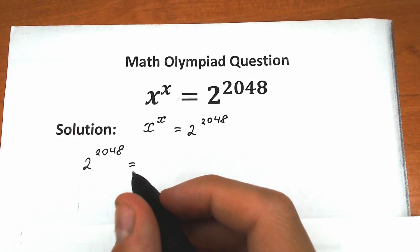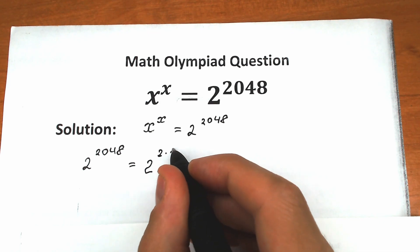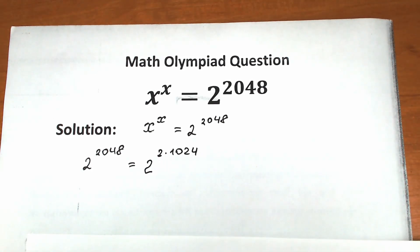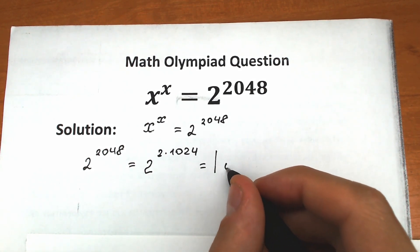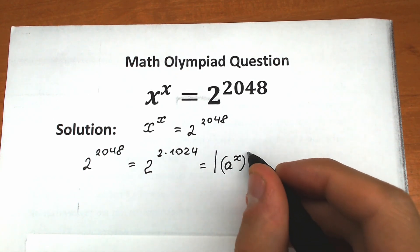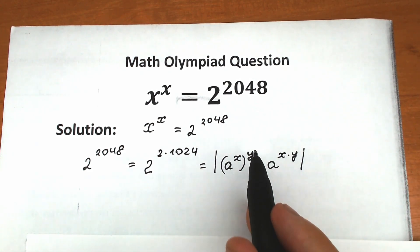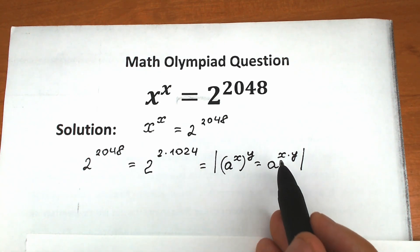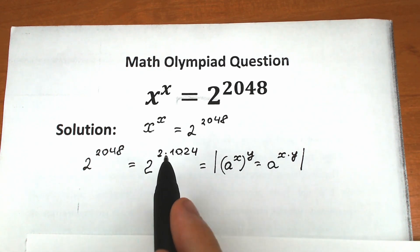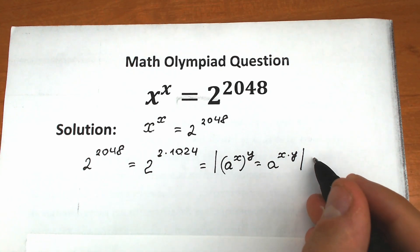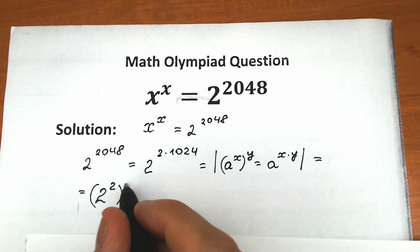Let's rewrite the power 2048 as 2 times 1024, so we have 2 to the power 2 times 1024. We need to apply a well-known rule: a to the power x, raised to the power y, equals a to the power x times y. In our case, we bring the 2 inside as a base raised to the power 2, giving us 2 squared raised to the power 1024.